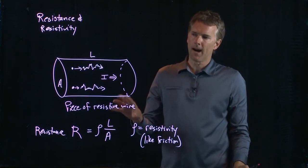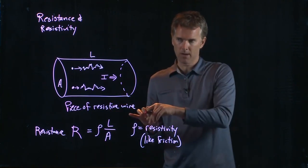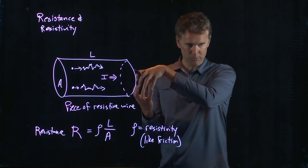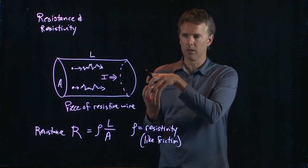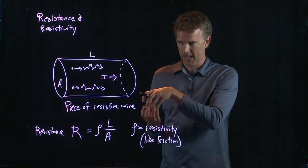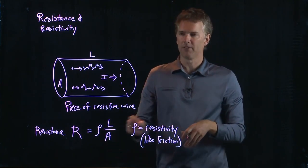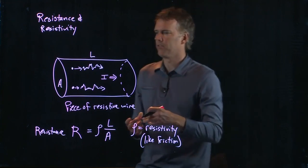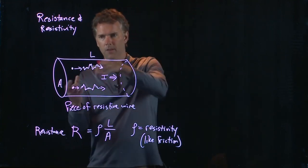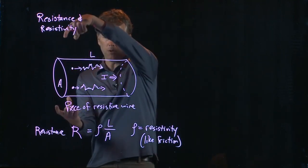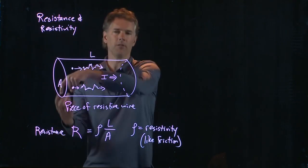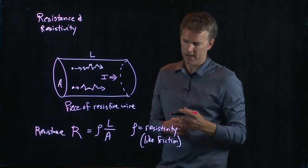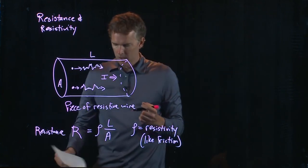And this is why when the car battery is attached to the starter motor, they use big, thick cables because they want to lower the resistance of the cable, and so they make the cross-sectional area very big. And that should make sense, right? If this really was a river, then A would determine sort of how wide the river is. And the wider it is, the easier it is for current to flow down that river.